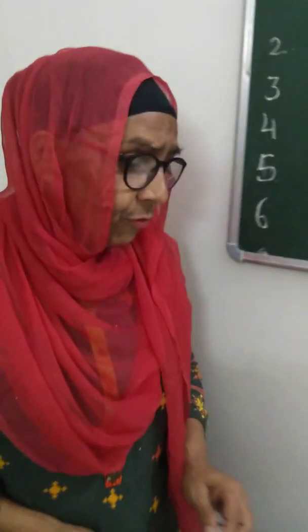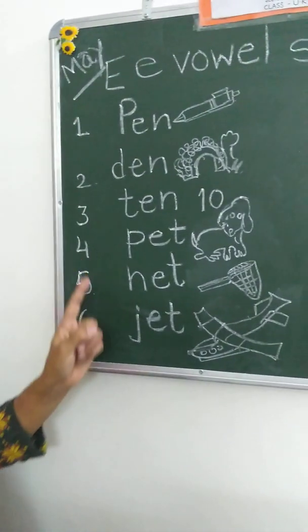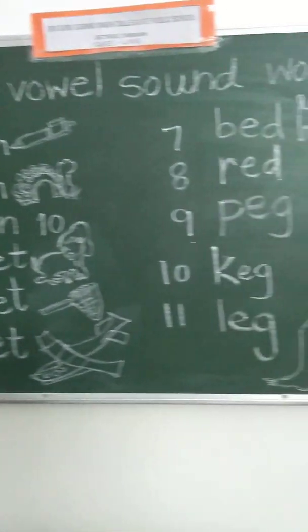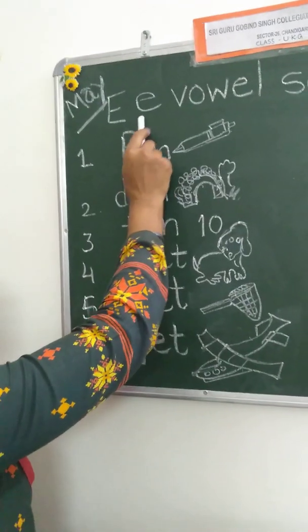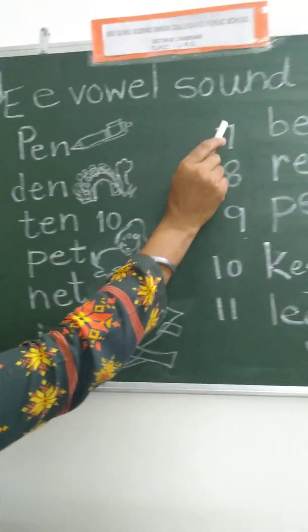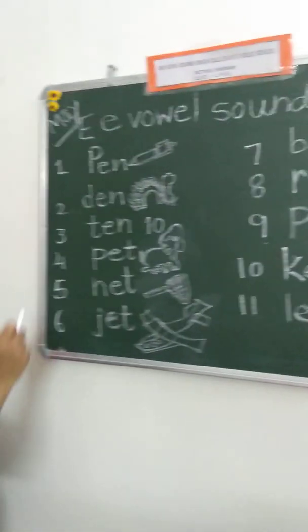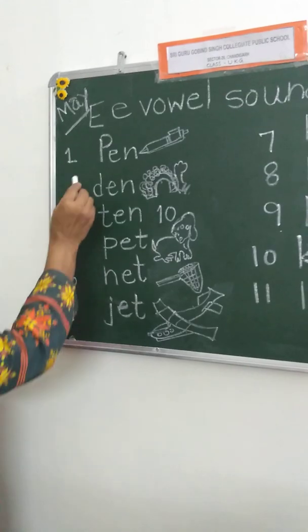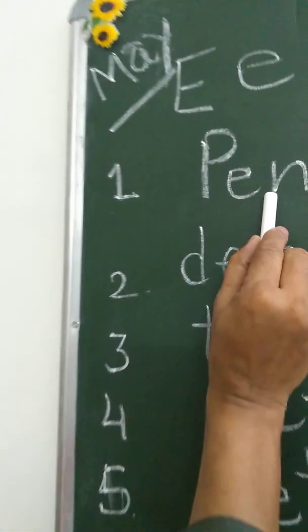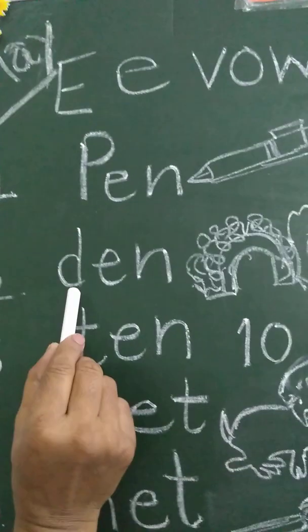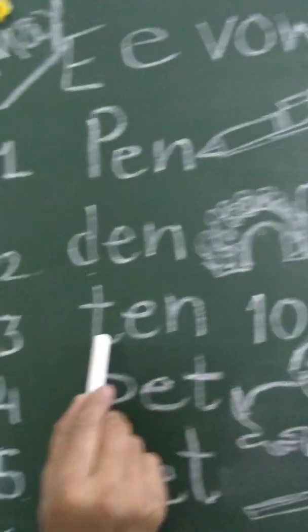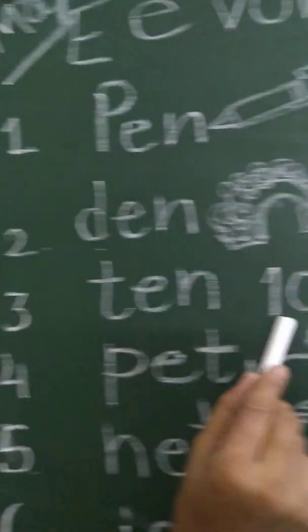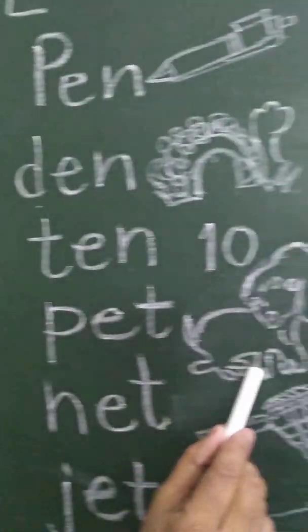Children, you can read more words from the board. Look at the board. Again, see the picture. Without the picture, you have to do reading. Number one: P-E-N: Pen. D-E-N: Den. T-E-N: Ten. P-E-T: Pet.